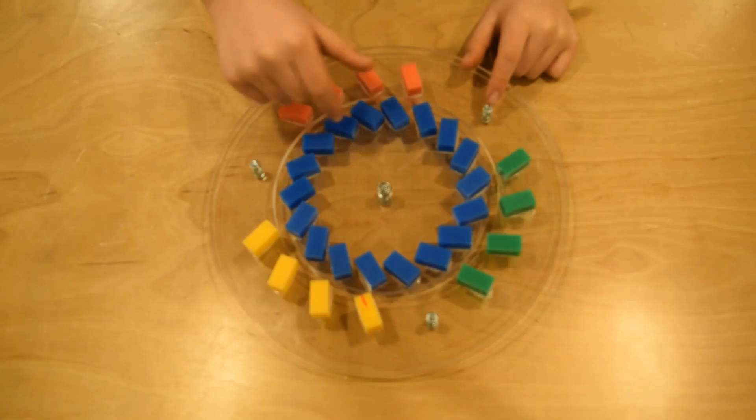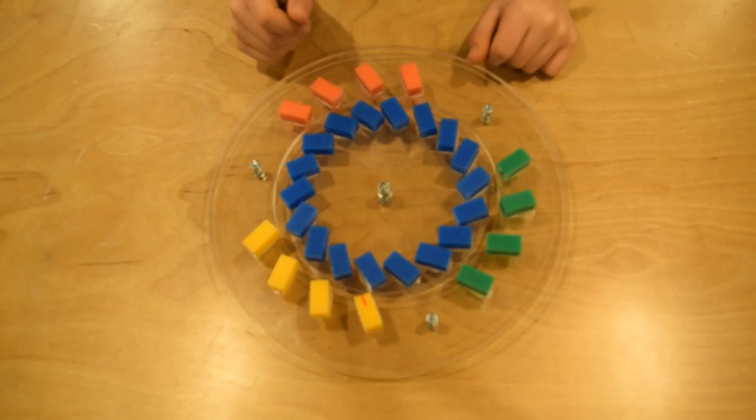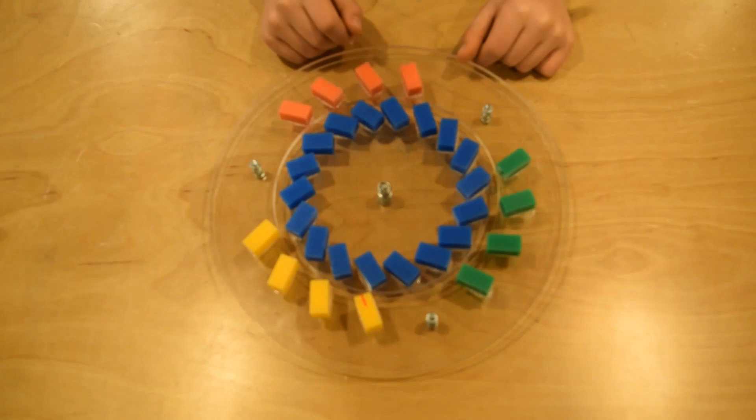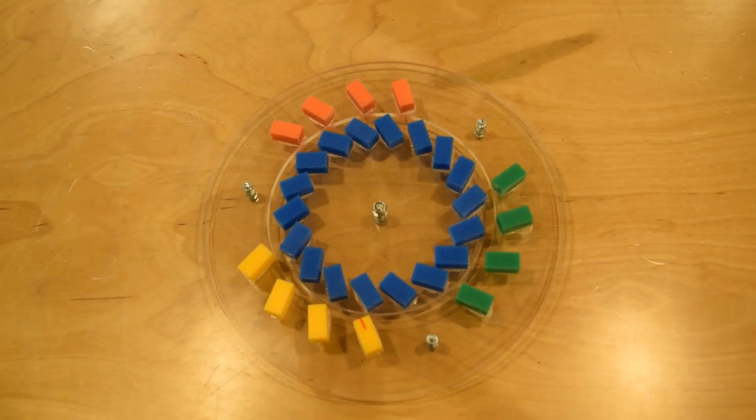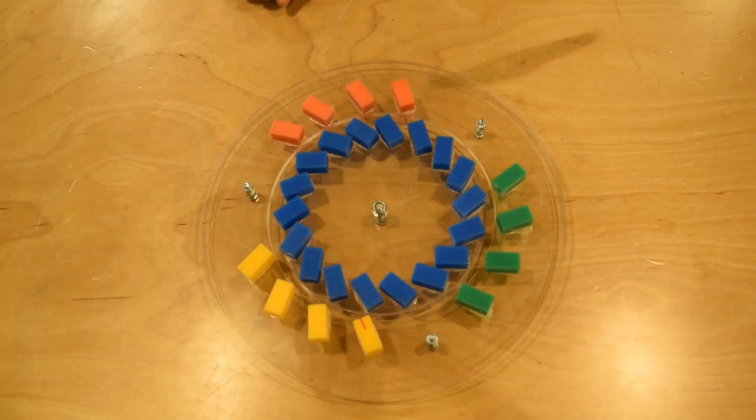When the blue rotor magnets line up with the yellow stator magnets on opposite corners, the yellow stator magnets are hesitating. The blue rotor magnets are deciding whether to go forward or backwards. At this point, yellow stator magnets are acting as an obstacle.